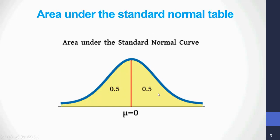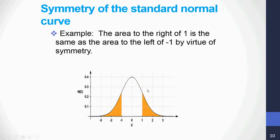These are important properties about the standard normal curve: the entire area is 1.0, the area to the left of 0 is 0.5, and the area to the right of 0 is 0.5. The second important property we need to pay attention to is symmetry.